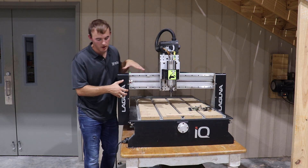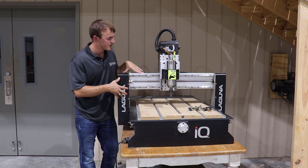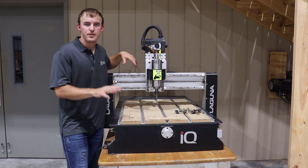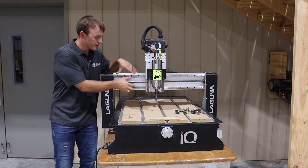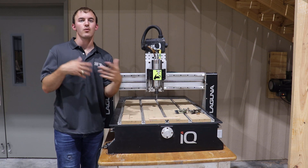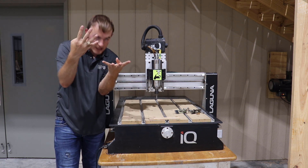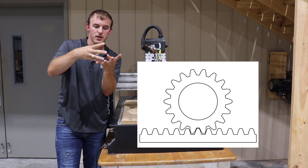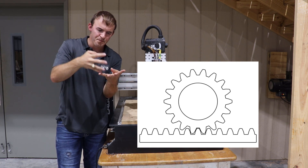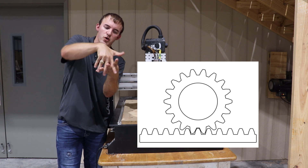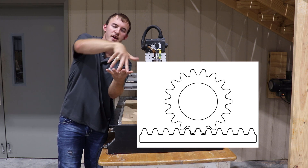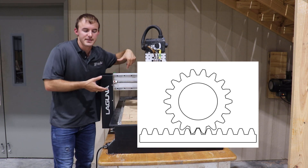The other part that makes the CNC move is the rack and pinion. If you ever hear that term, it's essentially like two gears — you have a circular gear that moves along a rail, transferring motion to the CNC. It's typically found on the Y-axis.